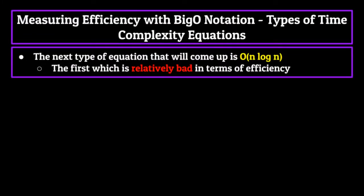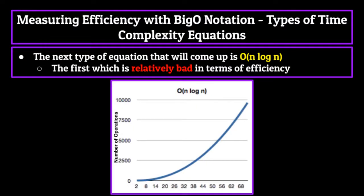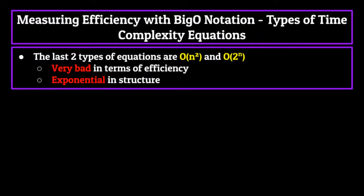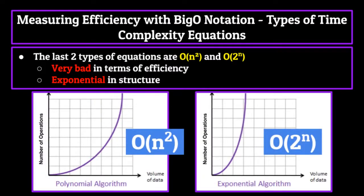The next type of equation is O(n log n). This equation is the first that is relatively bad in terms of efficiency. The graph shows a somewhat linear but increasing slope, meaning unlike O(log n), it won't become more efficient as the data set grows — the slope actually increases as the volume of data does. The last two types of equations are O(n²) and O(2^n). These are both incredibly inefficient equations which should be avoided if at all possible, because they are exponential in structure. The larger the data set, the more inefficient they become. The data structures we'll be talking about will never have time complexity equations outside of these five we've just covered, so we're going to stop there.